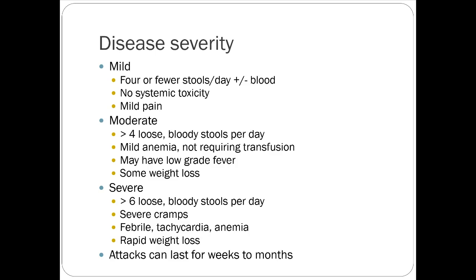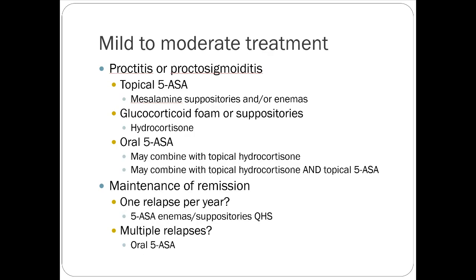Disease severity in UC similarly involves bloody stools, weight loss, and diarrhea. Because 5-ASA drugs work well in the colon, they take more of a front-line role here. Suppositories and enemas — not generally useful in Crohn's — are useful in ulcerative colitis, especially if disease is towards the distal end of the colon. Foaming enemas and steroid-containing rectal products like hydrocortisone are options. You can give an oral 5-ASA drug plus a rectal 5-ASA drug to cover both ends of the colon.